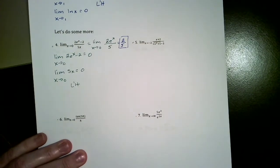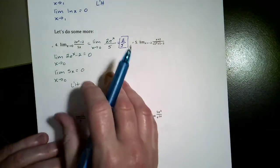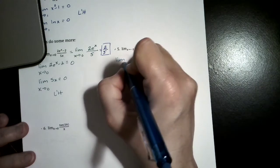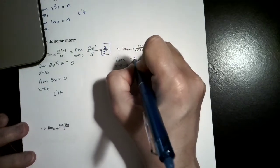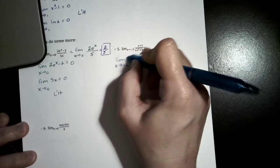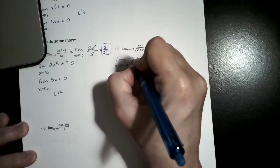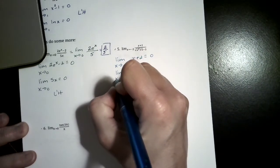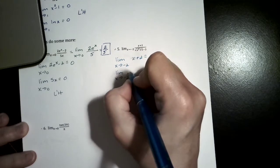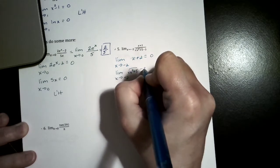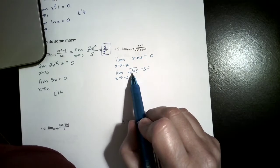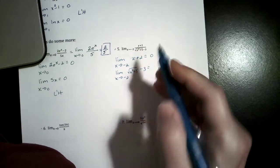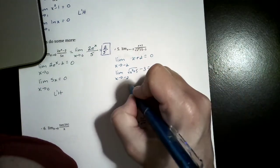This next one is kind of a scary limit problem. Let's do the limit of the numerator: the limit as x approaches negative 2 of x plus 2. Well, negative 2 plus 2 is 0. Now the limit as x approaches negative 2 of the denominator, x squared plus 5 minus 3. Negative 2 squared is 4, 4 plus 5 is 9, the square root of 9 is 3, and 3 minus 3 is 0. So I can go to L'Hôpital.